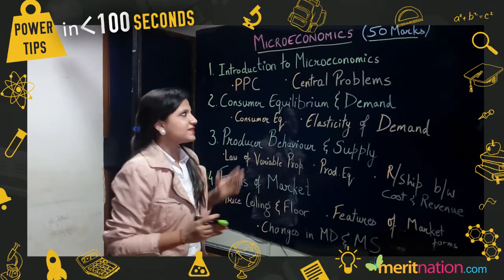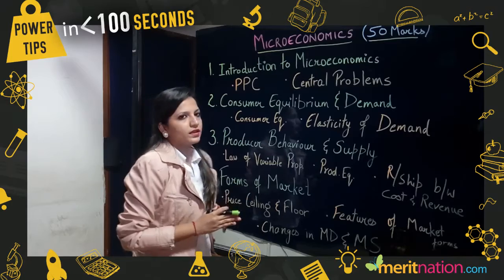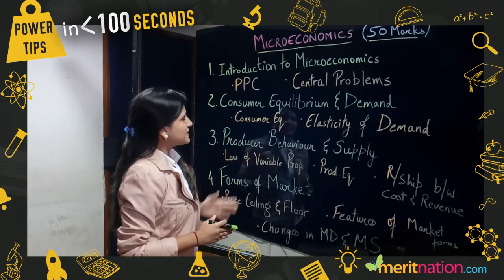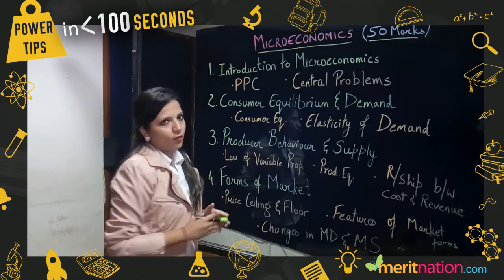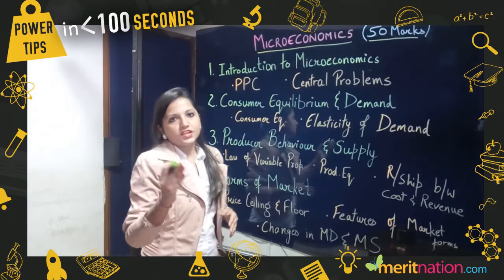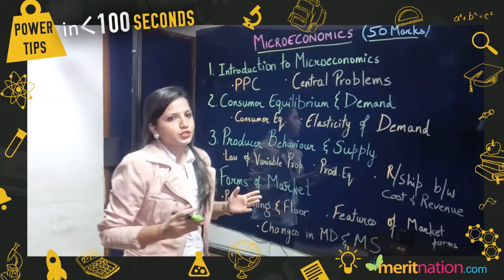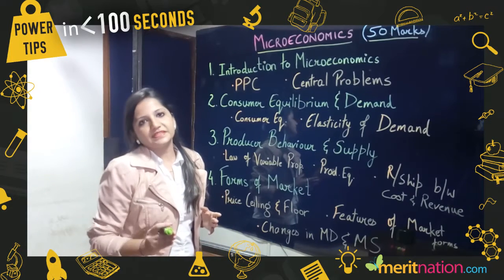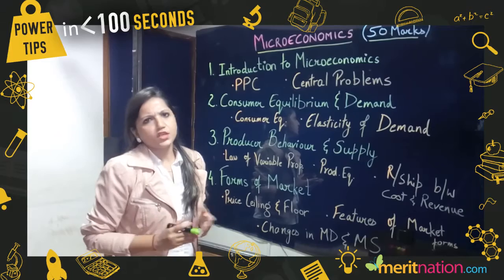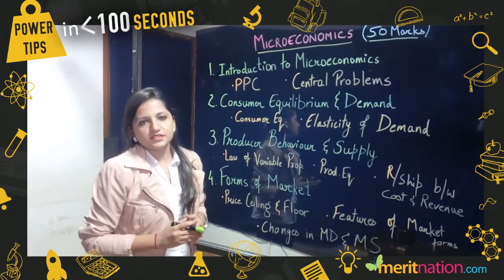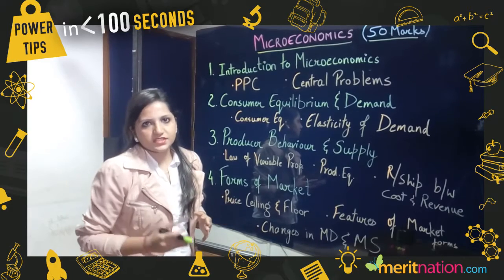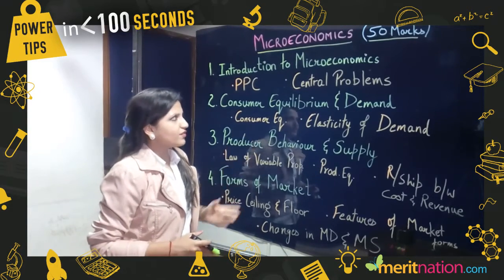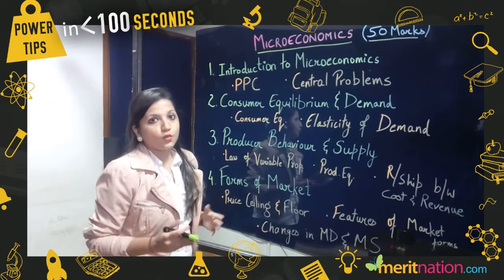In Chapter 1, there are two important topics: PPC and Central Problems. Under PPC, questions on the impact of various policies or schemes can be asked — such as Digital India and Make in India. Under Central Problems, questions on what to produce, how to produce, and for whom to produce can be asked.